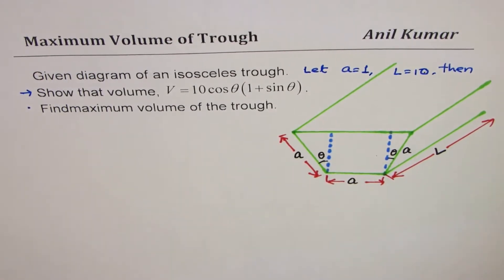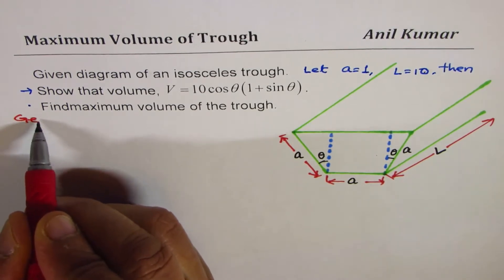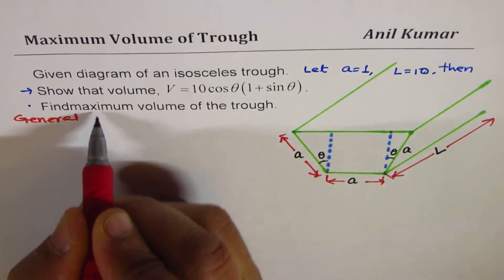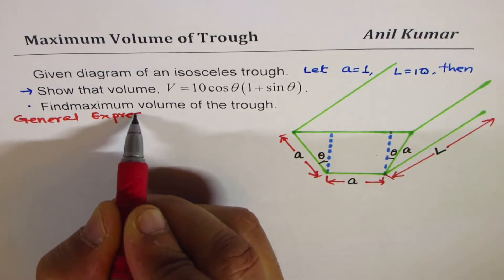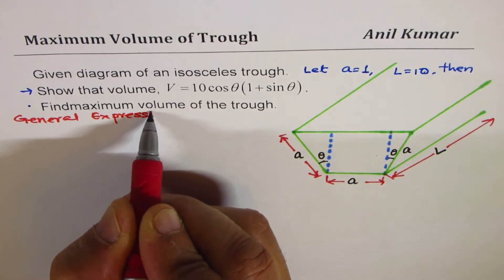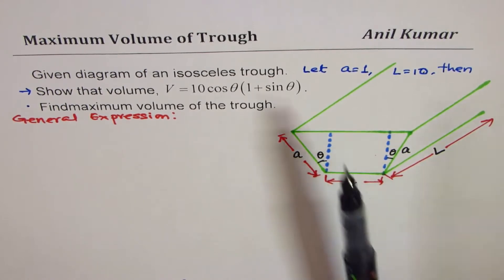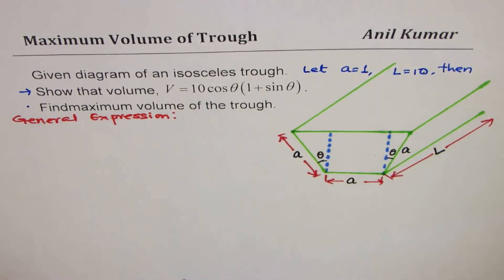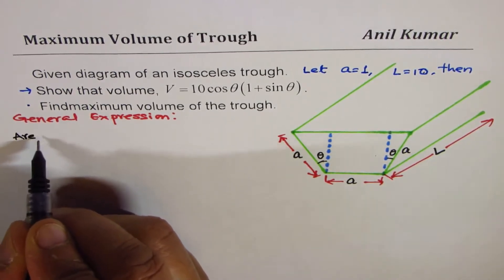What I'll do is derive a general expression first, and then substitute a equals 1 and L equals 10 to get the specific volume formula. So, what is the area of a trapezoid?